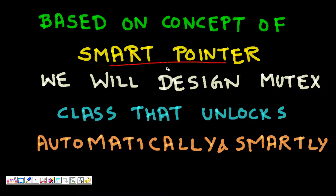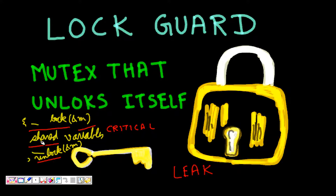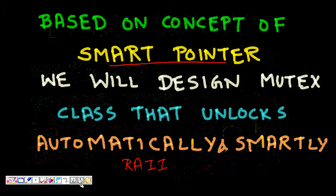To handle this, we will use the concept of RAII — Resource Acquisition Is Initialization — similar to smart pointers. We will design a mutex class that unlocks automatically and smartly when the mutex goes out of scope. To achieve this, we will use the concept of objects in C++.